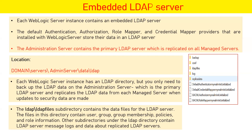Inside the LDAP directory you will see more files and subdirectories, including a folder named ldapfiles. This ldapfiles directory contains the data files for the LDAP server. This directory contains user, group, group membership, policies, and role information — all user and group information created from the WebLogic console is stored here. Other subdirectories under the LDAP directory contain LDAP server message logs and data about replicated LDAP servers.